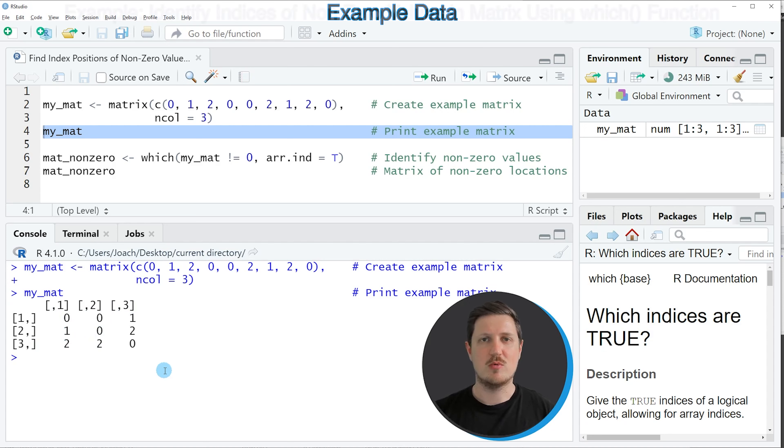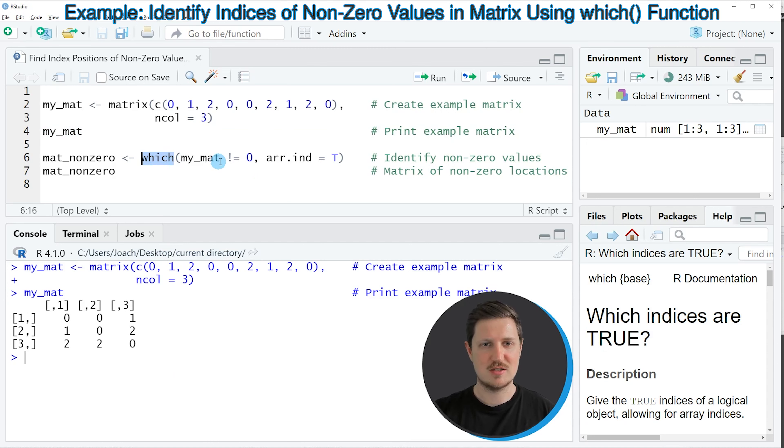Now let's assume that we want to return all index positions of the values that are unequal to 0. Then we can apply the which function as you can see in line 6 of the code. Within the which function we need to specify the logical condition that we want to use. So in this case we want to find the values that are not 0 in our matrix. And then we also need to specify the arr.ind argument to be equal to true.